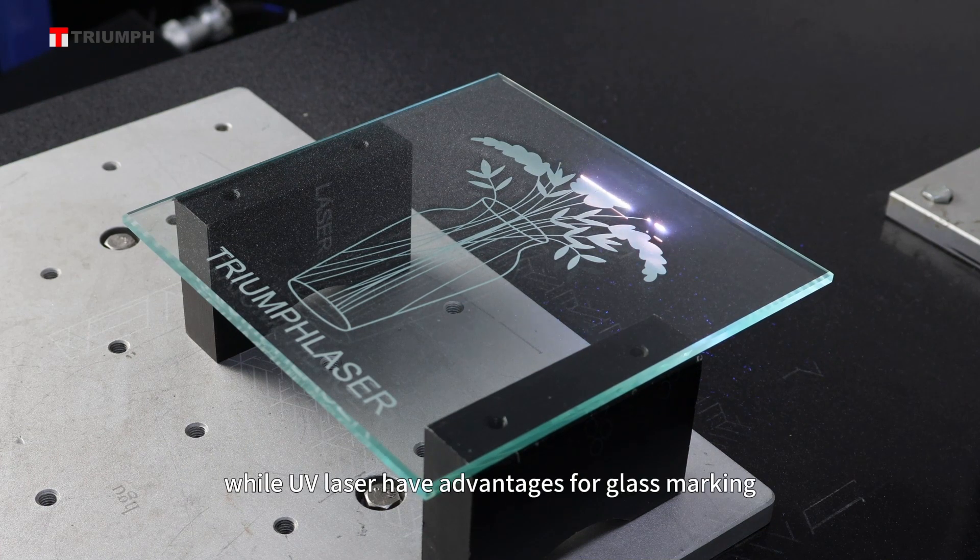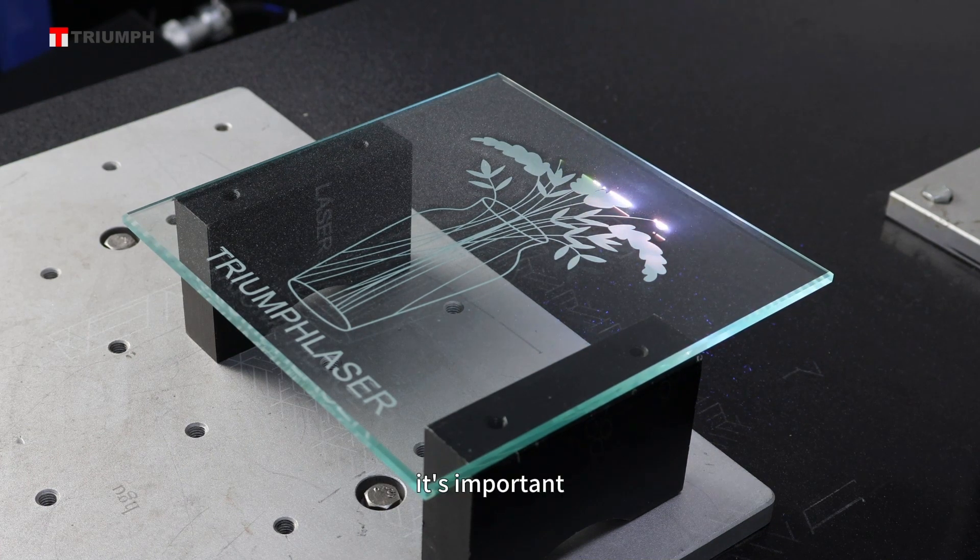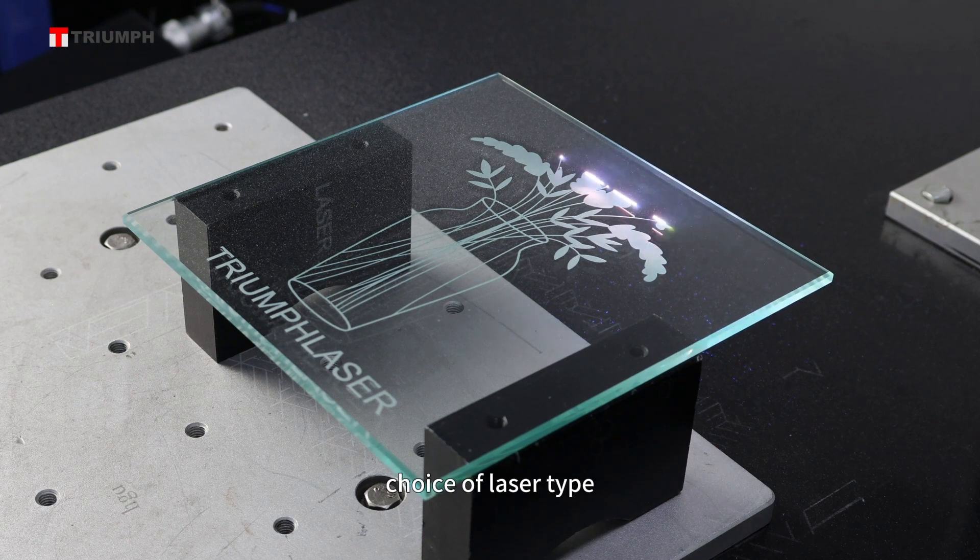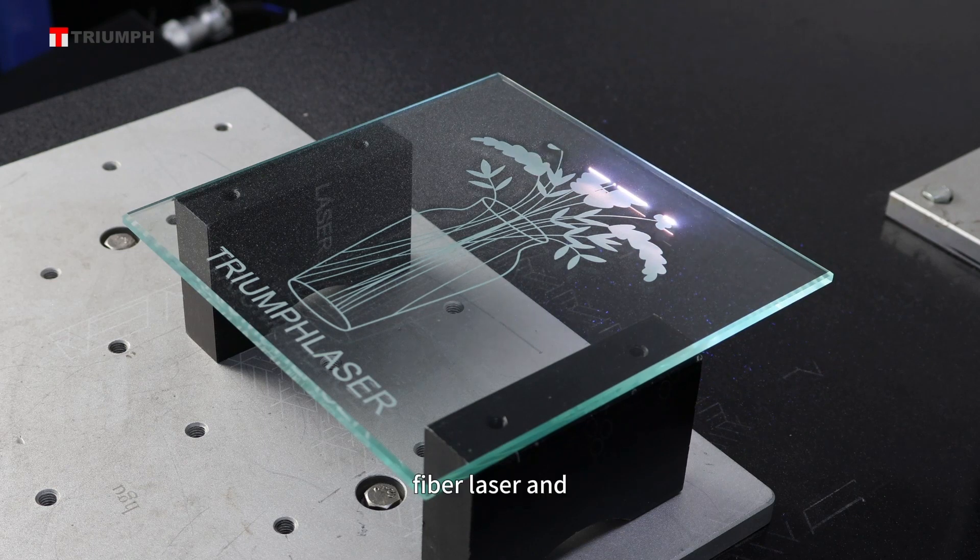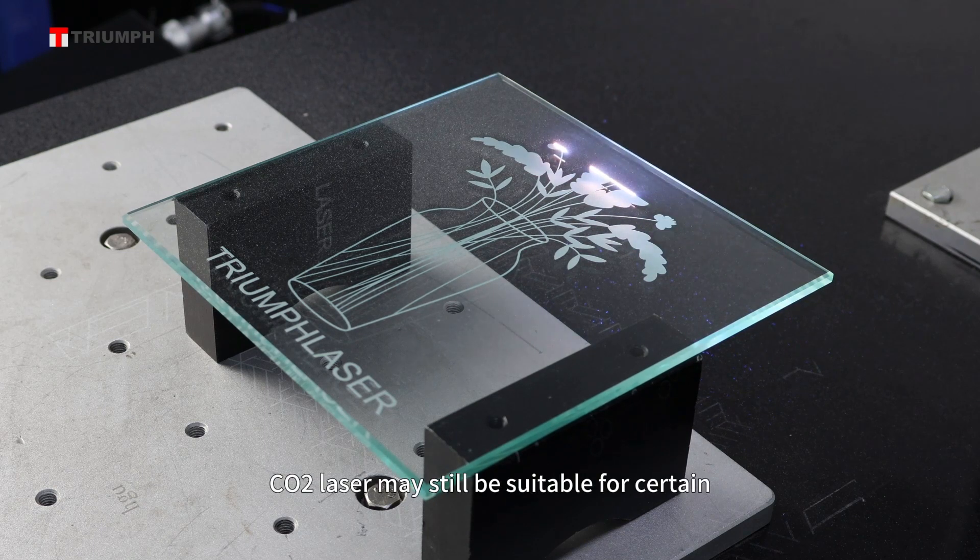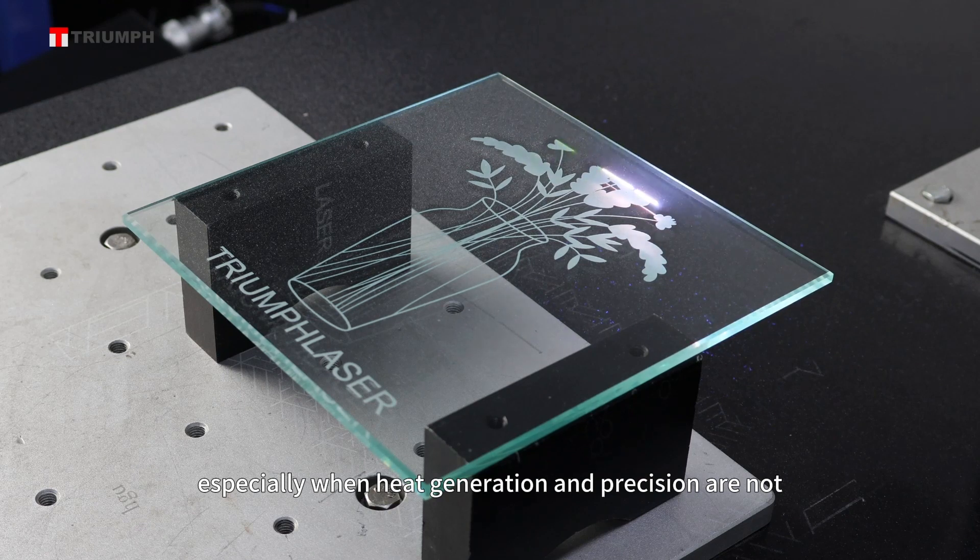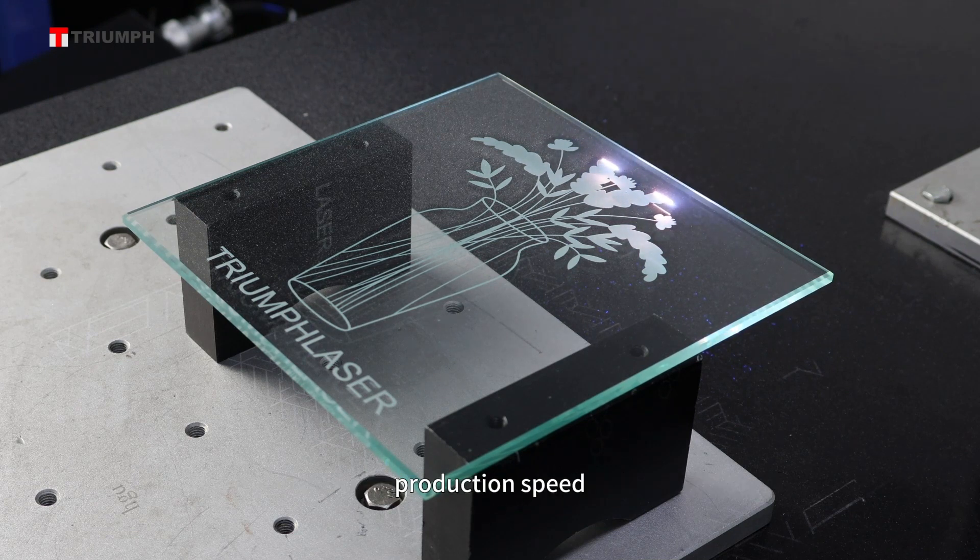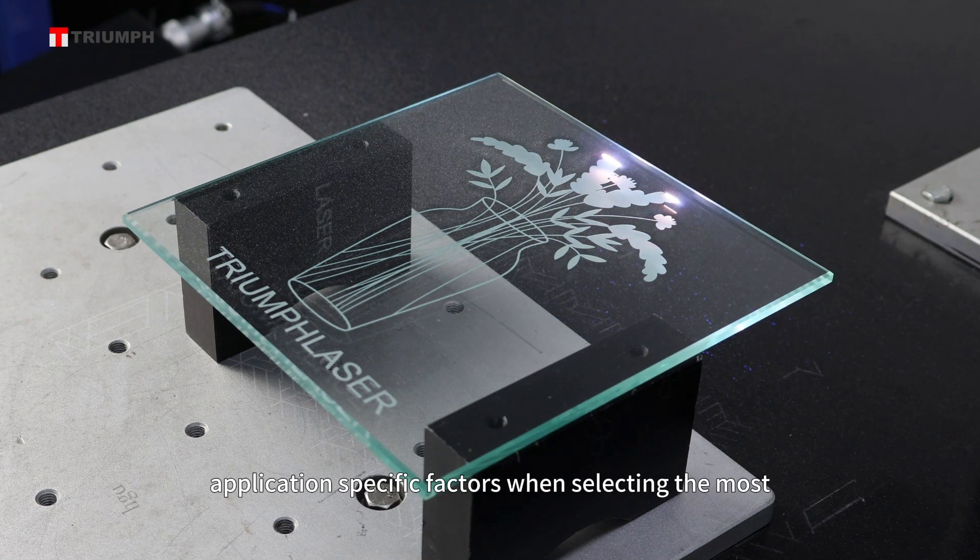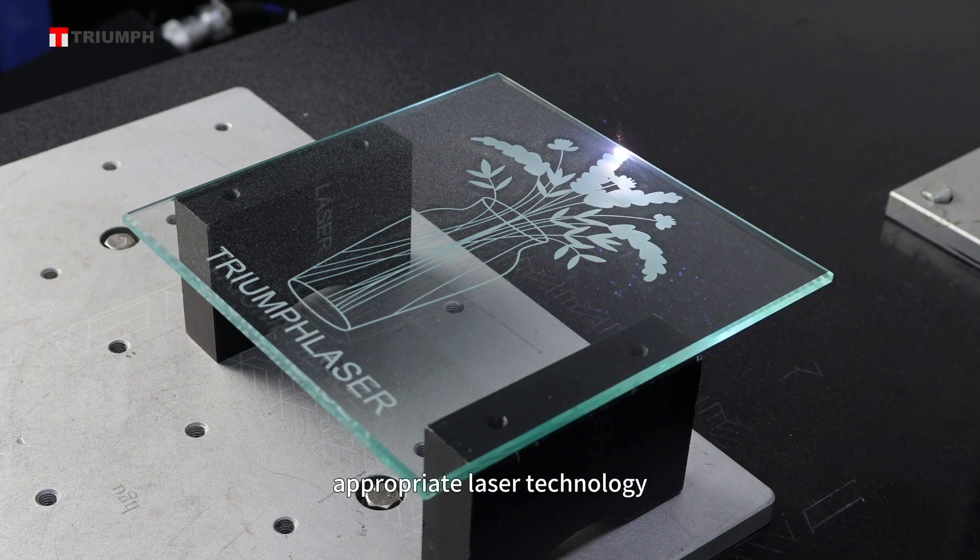While UV lasers have advantages for glass marking, it's important to note that the choice of laser type also depends on the specific requirements of the application. Fiber laser and CO2 laser may still be suitable for certain glass marking tasks, especially when heat generation and precision are not critical factors. Manufacturers often assess the material, marking depth, production speed, and other application-specific factors when selecting the most appropriate laser technology.